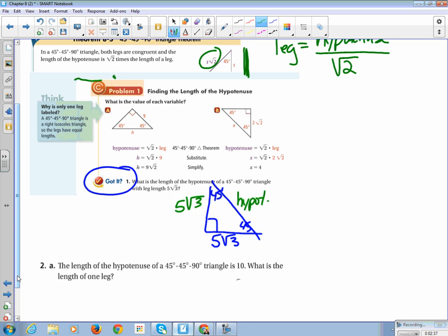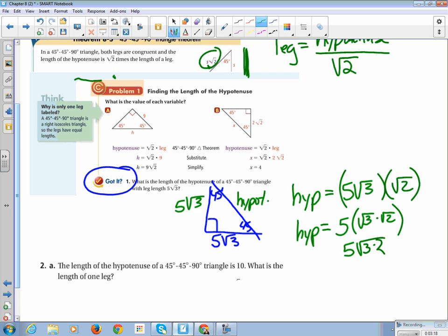So to find the hypotenuse, I'm going to take my leg, and I'm going to multiply it by square root of 2. So our hypotenuse is equal to our leg length times the square root of 2. Now, all that stuff that we did in pre-algebra and at the beginning of the year in algebra, we're going to apply it here. So this is the same as 5 times root 3 times root 2. Anytime you have square roots multiplied by each other, you can multiply them together underneath the same radical. And this is actually 5 square root of 6.